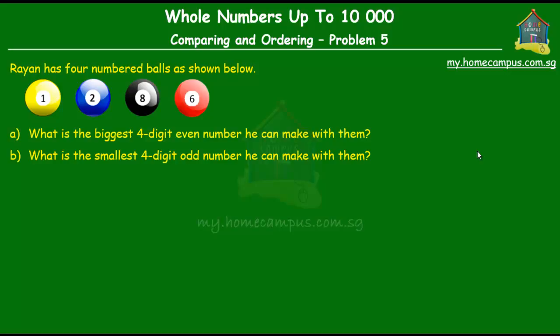Now in a previous lesson, we learned how to make the biggest and the smallest four-digit numbers given four digits. In this lesson, it's the same except for a slight twist. We have to make the biggest four-digit number, but that number should be even. So let's tackle that first.